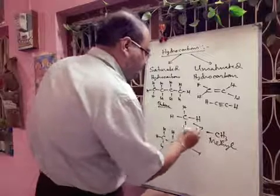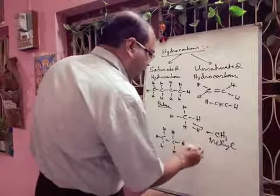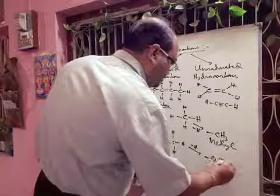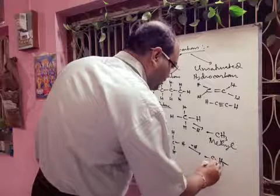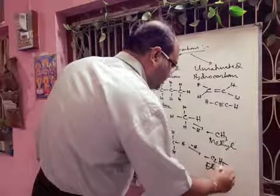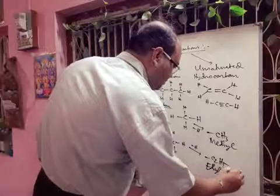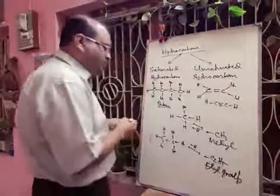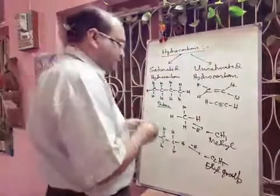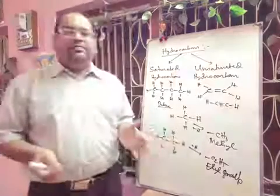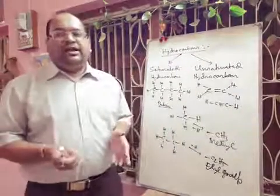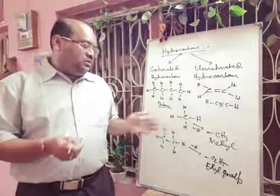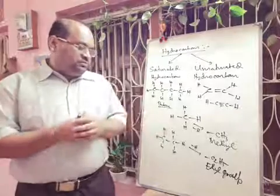If we replace one hydrogen from ethane, then we are getting the C2H5 group, and this is called the ethyl group. In the same way, we can take propane — if we replace one hydrogen, it will be the propyl group.